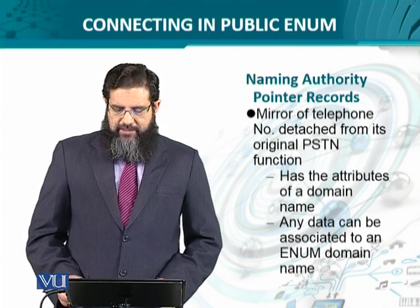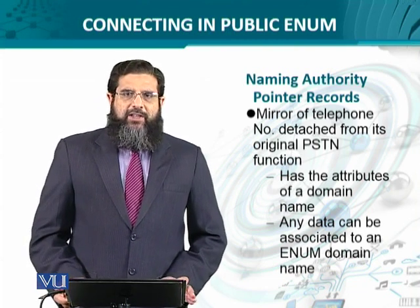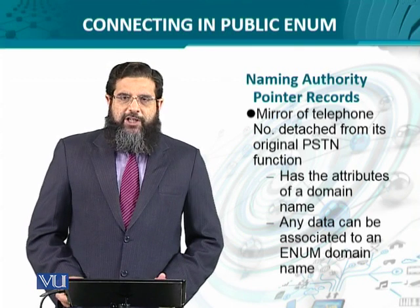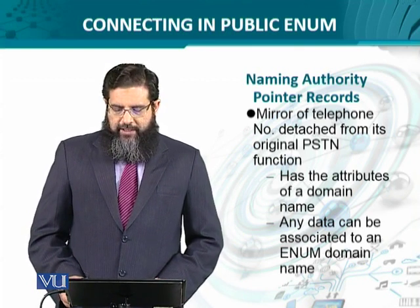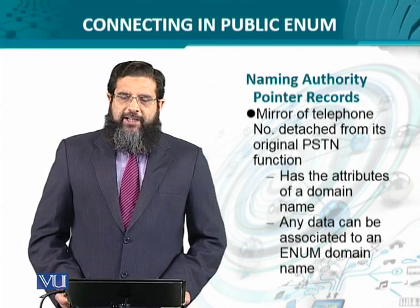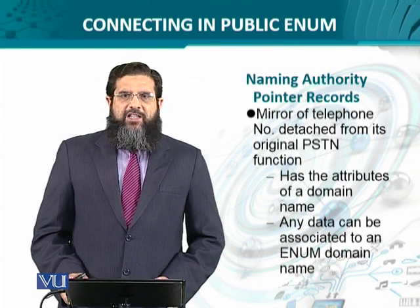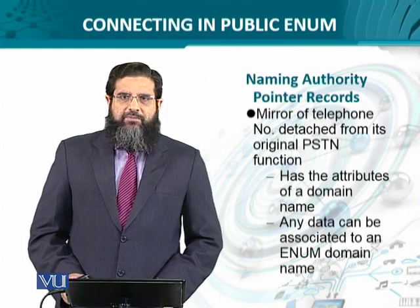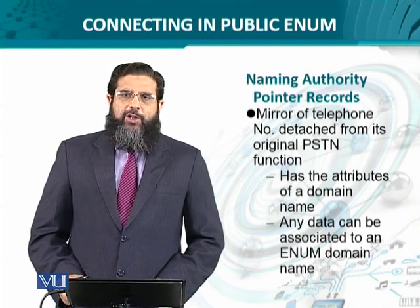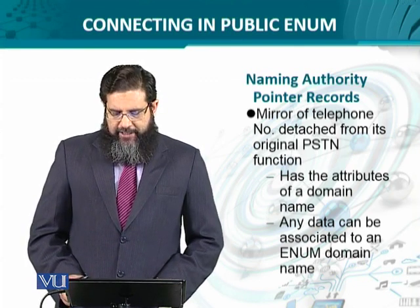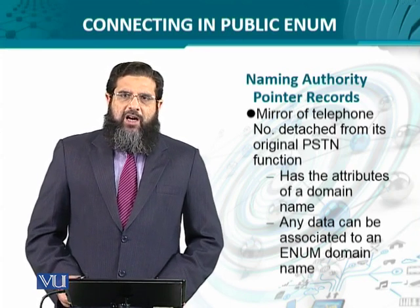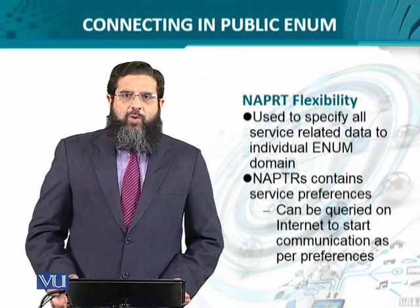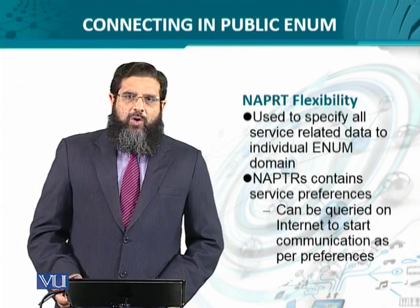There is an interesting concept called Naming Authority Pointer (NAPTR) records. Once we have an authoritative address, we can use that address to point to certain other records. If we look at the mirror or inverse of a telephone number without associating it in PSTN terminology, it is essentially a number written like an IP address — it has the attributes of a domain name. Like any URL, any data can be associated to an ENUM domain, and one URL can refer to more than one resource on the internet.